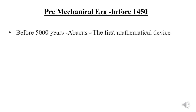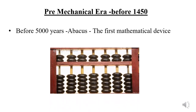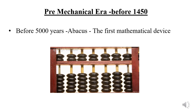Let us now see what important events happened in each era of computer history. In the first era, that is the pre-mechanical era, one important event took place — the discovery of the abacus by the Chinese around 3000 BC. This is the world's first mathematical device.